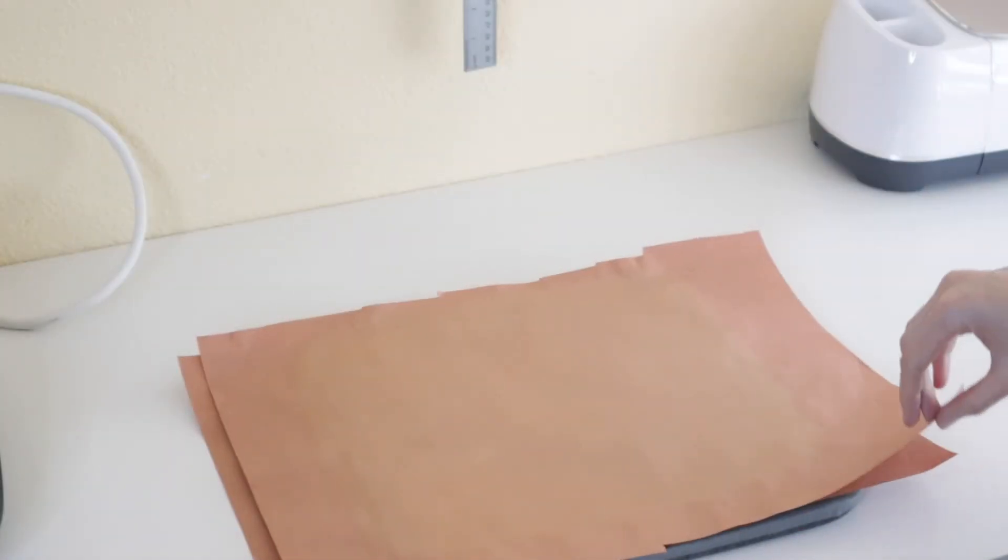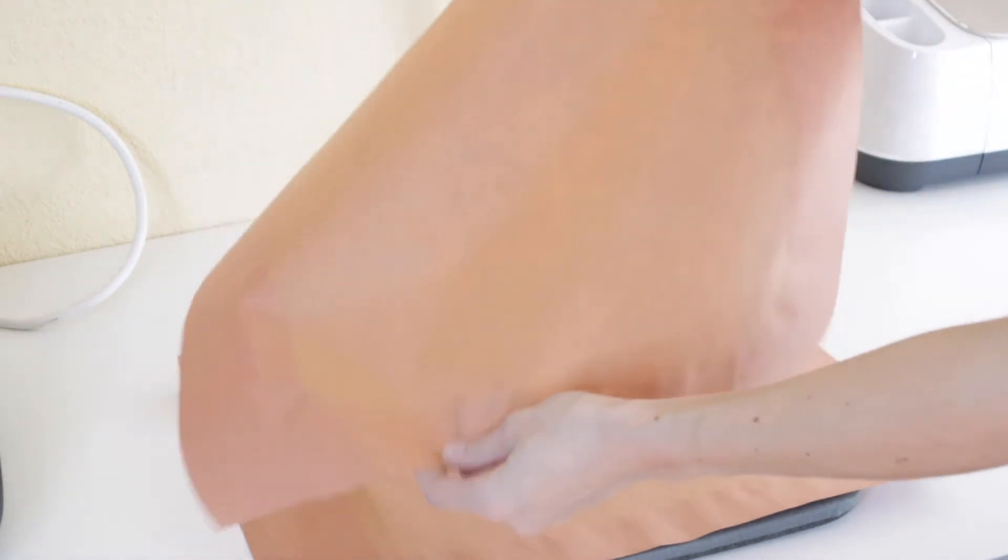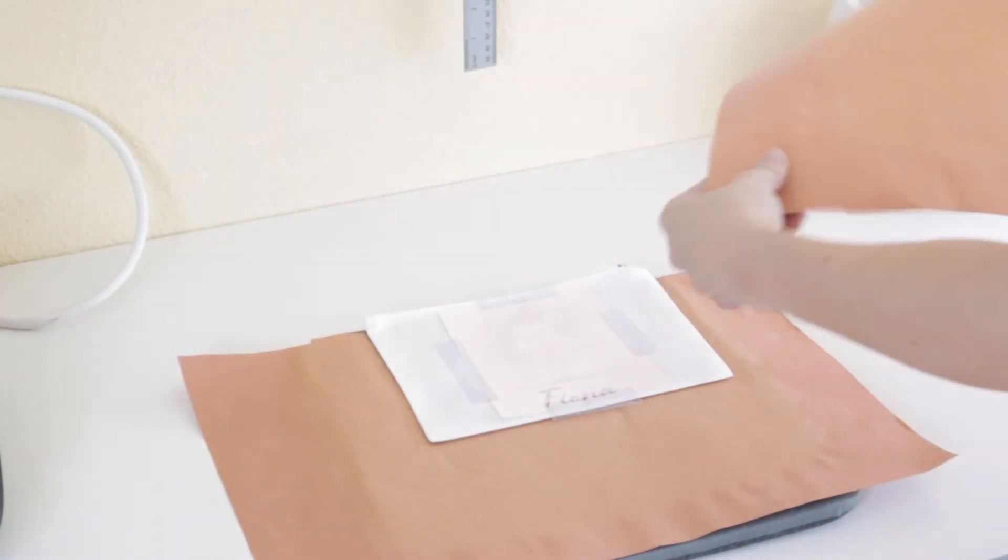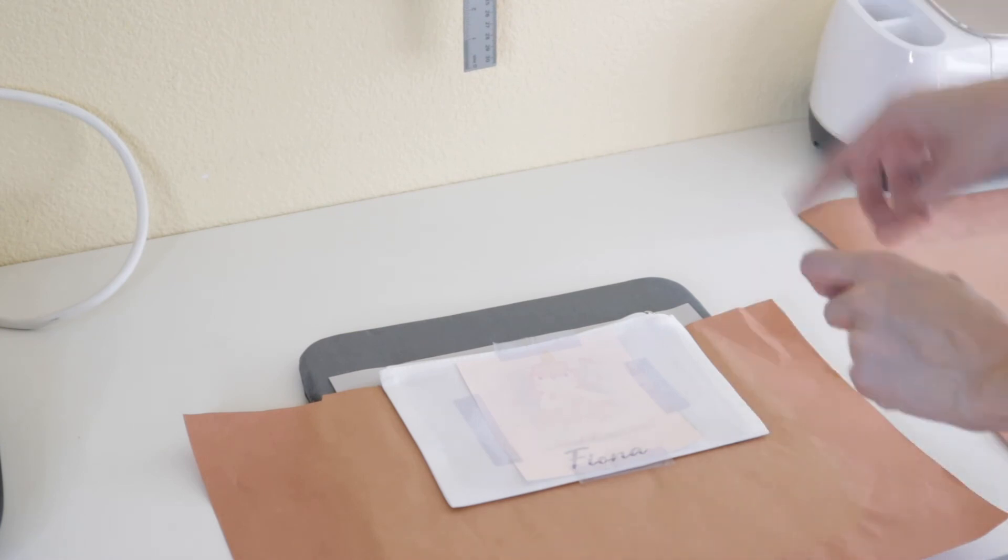Okay so I'm gonna go ahead and remove my butcher paper. You can see some of the ink got onto the butcher paper so that's why it's nice to have the butcher paper down to protect your heat press. So be careful this is really hot. Now just another tip is when you go ahead and remove the paper to just remove it right away you don't want to slide it across the bag because that will also cause ghosting.